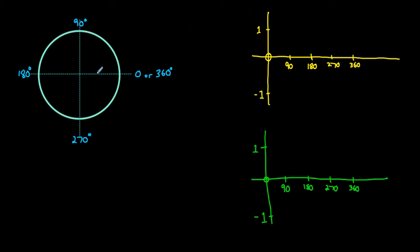Let's look at how we can relate the primary trig ratios — sine, cosine, and tan — to the unit circle. Remember, a unit circle is a circle centered at the origin with a radius of 1.